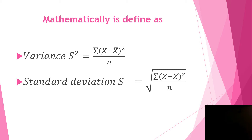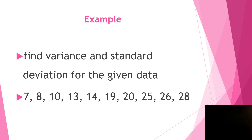The standard deviation is simply the square root of the sum of (x minus x̄)² divided by n. Variance is denoted by s² while standard deviation is denoted by s. We will discuss later in another video how to find these using SPSS software.